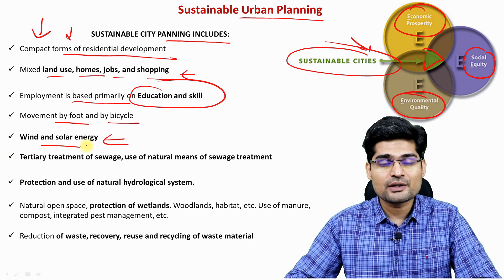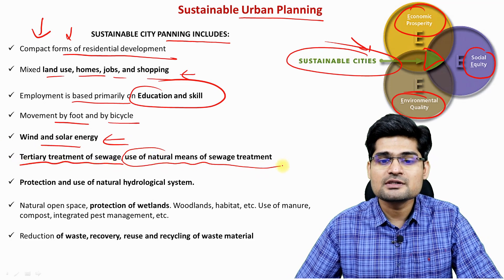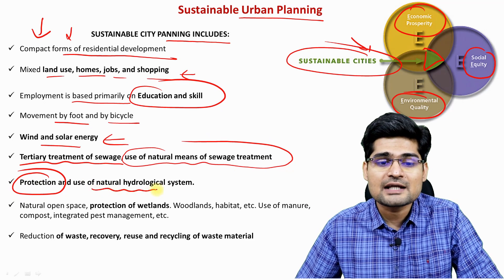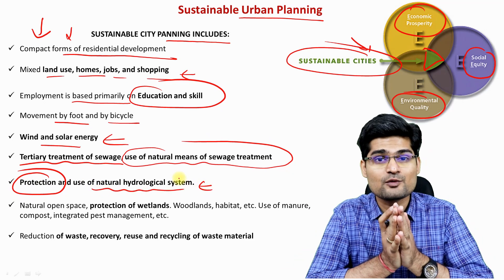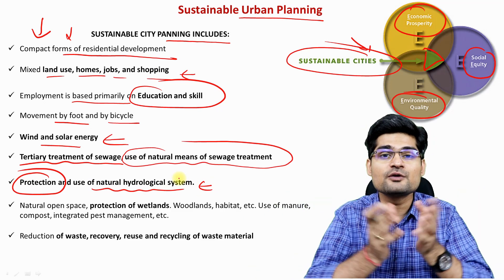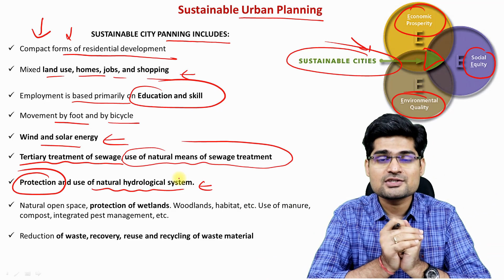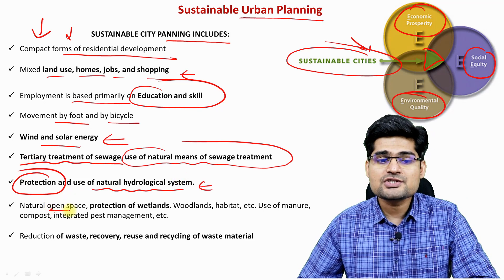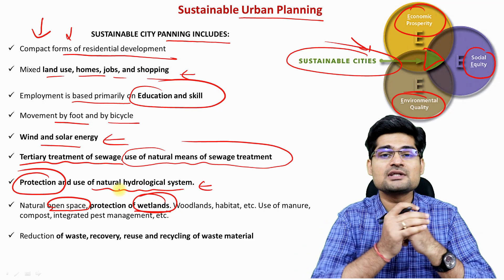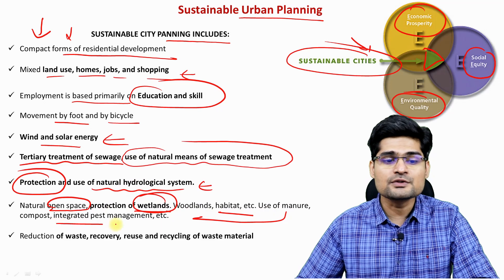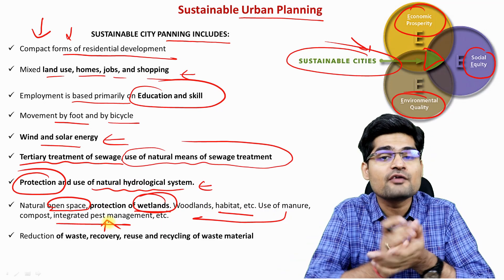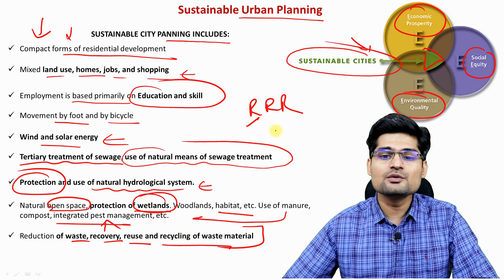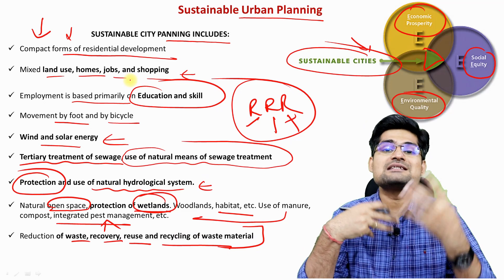Further sustainable planning elements include tertiary treatment of sewage and use of natural means of sewage treatment, urban waste disposal, and protection and use of natural hydrological systems. If we are not recharging our groundwater or ensuring pollution-free surface water flow, that is a problem. Water harvesting structures have been made mandatory for every building in many parts of India and the world. Natural open spaces, protection of wetlands — remember the Ramsar Convention — and woodlands, habitat, use of compost, integrated pest management in organic forms, and the 3R concept: reduce, reuse, recycle.